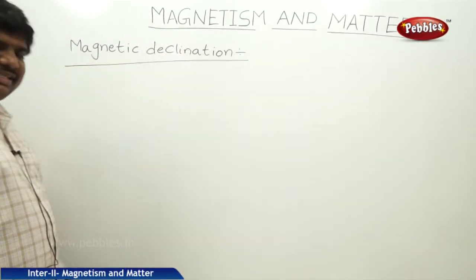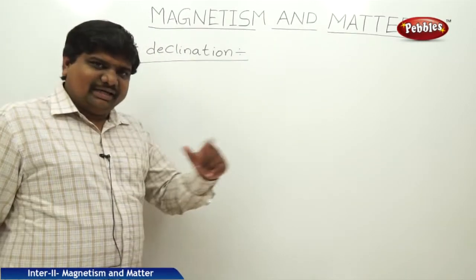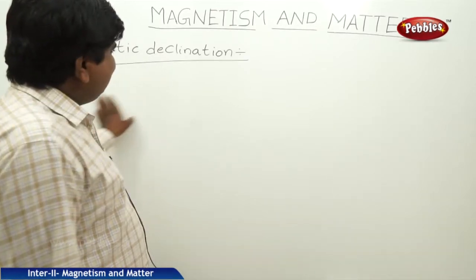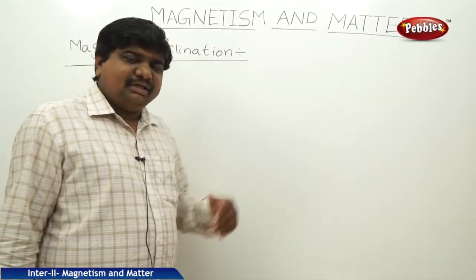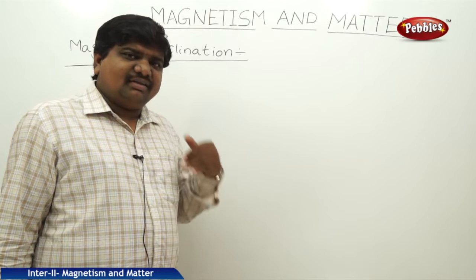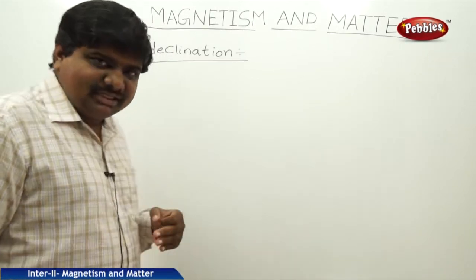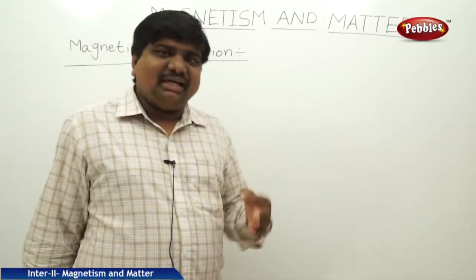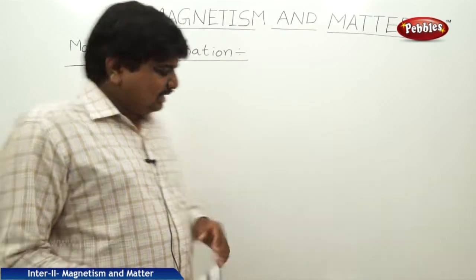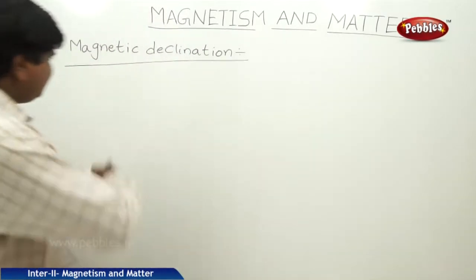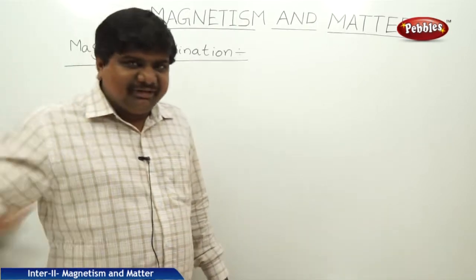Now we are going to discuss about magnetic declination. Magnetic declination, inclination, and angle of dip — these three are interesting physical quantities or physical parameters associated with earth's magnetism. Before going to discuss about that, first we should imagine the earth's magnetic field.